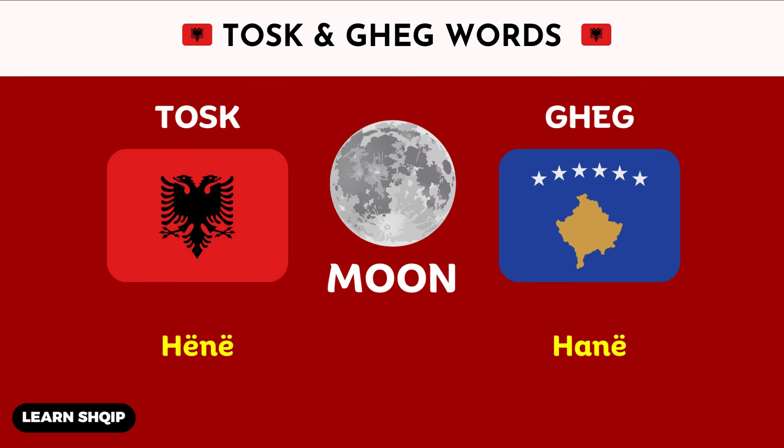Then we have the word moon. For moon, in Tosk, you will say Hn. And then in Geg, you are going to change it to Han.